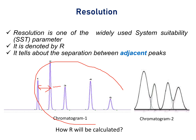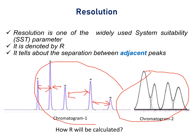Similarly, peak 2 is separated from peak 3, peak 3 is well separated from peak 4, and so on. But in chromatogram 2, peaks are not separated from their adjacent peaks. For example, this peak is not well separated from its adjacent peak. The question is: how will resolution be defined and how will it be calculated?